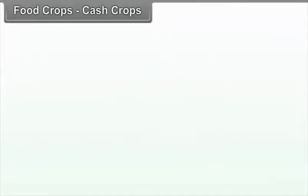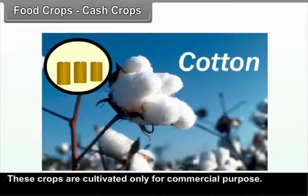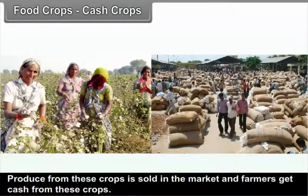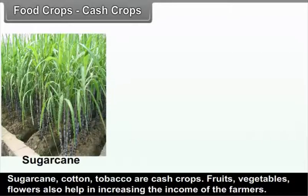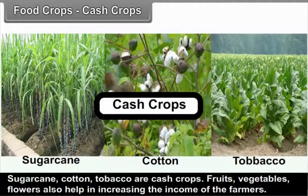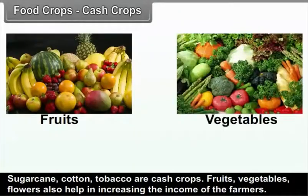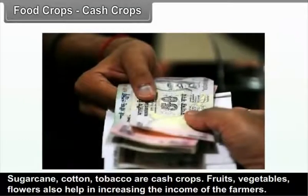Cash crops are cultivated only for commercial purposes. Produce from these crops is sold in the market and farmers get cash from them. Sugarcane, cotton, and tobacco are cash crops. Fruits, vegetables, and flowers also help in increasing the income of farmers.